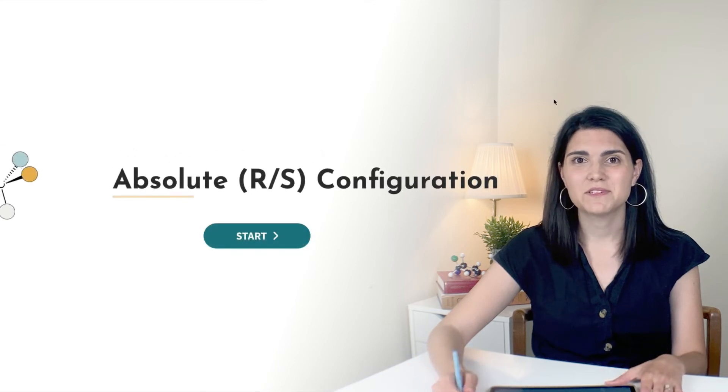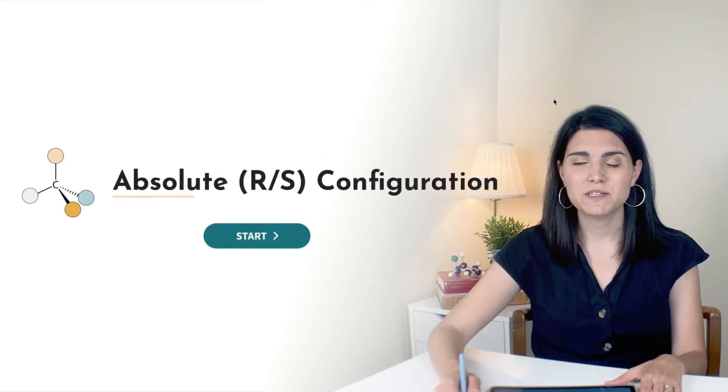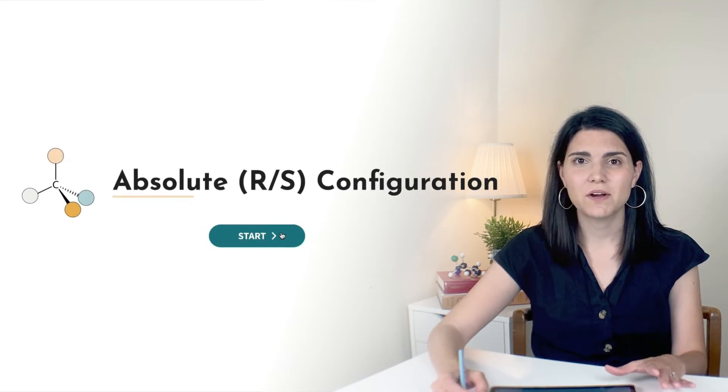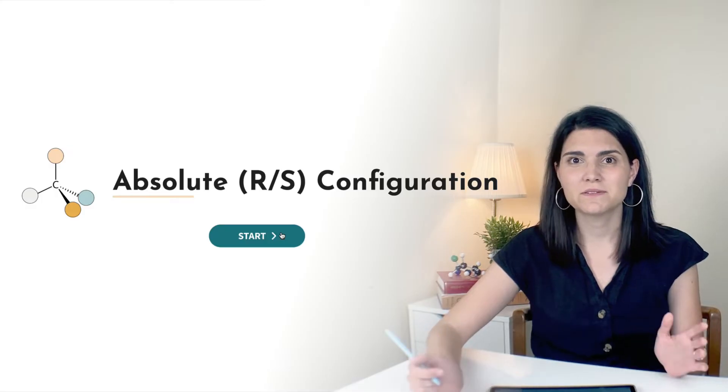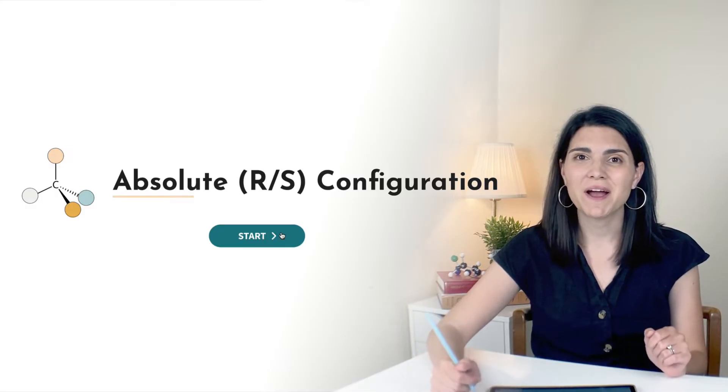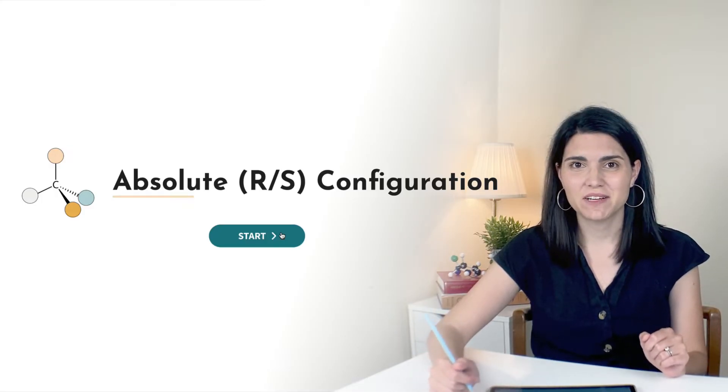In this organic chemistry tutorial, we're going to be talking about the absolute configuration of chirality centers, also known as R and S configurations.